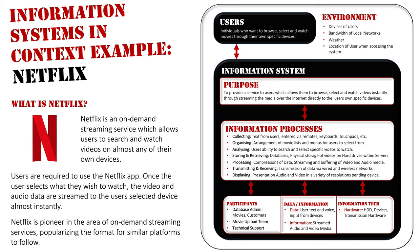Finally, the software: a database management system governing the database that stores all the movie and customer details. Also a Network Operating System, or NOS, because Netflix is part of a larger network — some sort of server set up for the network operating system so it can run on a network. And very importantly for the user, the Netflix app itself, which allows them to watch, access, and search for the movies they want to watch. I hope this video has been a good introduction and a great example of how information systems in context works using an example like Netflix that you are familiar with.